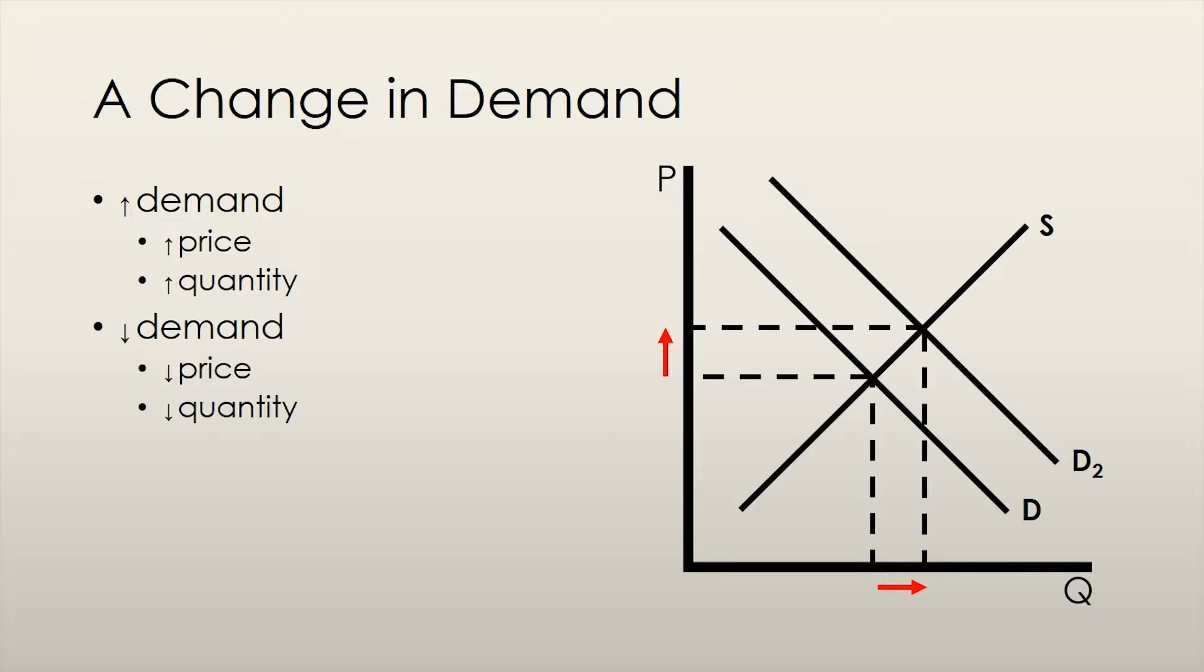Let's say that some factor causes the demand for a good to increase. If this happens, the intersection of the new demand curve with the supply curve occurs at a higher price and a higher quantity. The market moves from the old equilibrium to the new equilibrium using the same mechanisms as I described in a previous video.